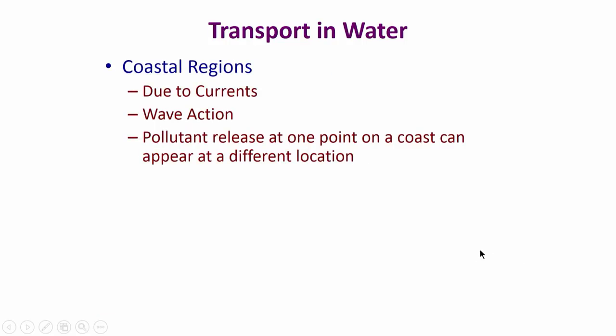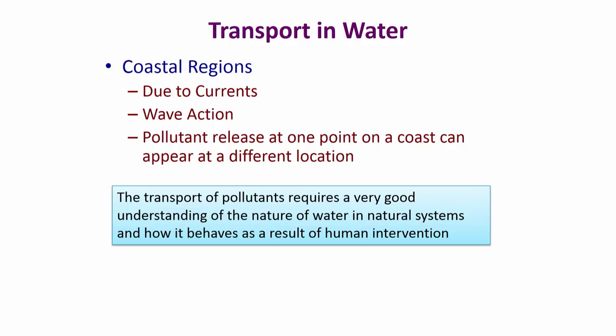In coastal regions, a pollutant released at one point can move to another location due to currents and wave action. The summary is that transport of pollutants requires a good understanding of the nature of water — how it moves in natural systems, and whether it has diurnal or seasonal variations — all of which is important to assess if a pollutant released from one place will have any effect on the population living in a different location.